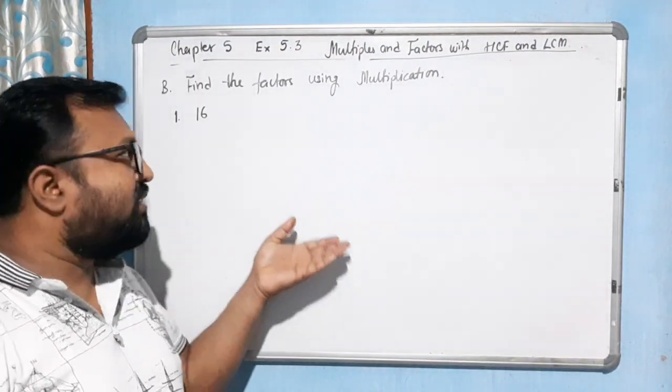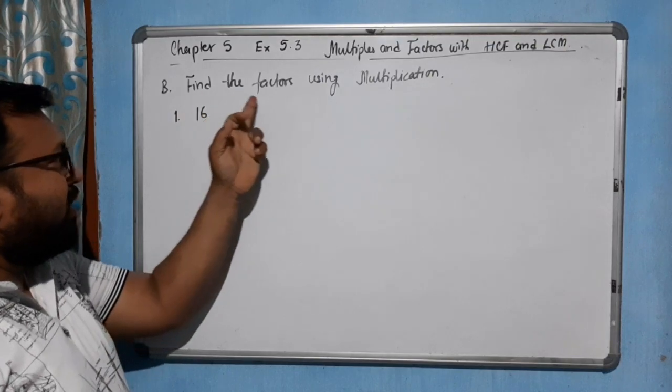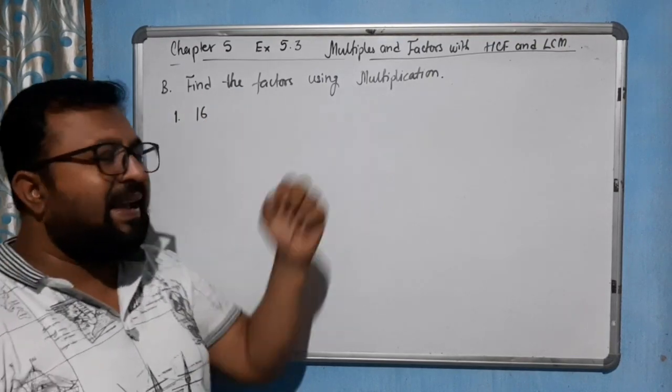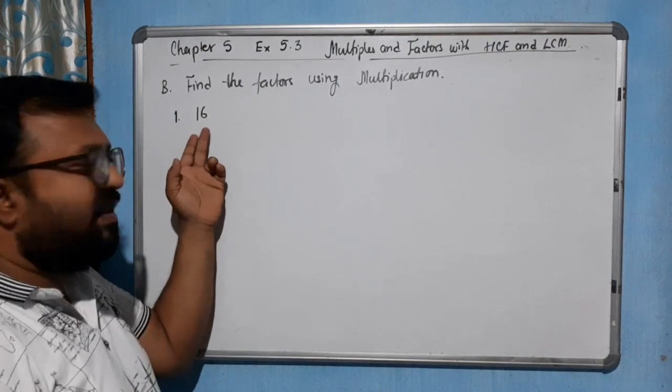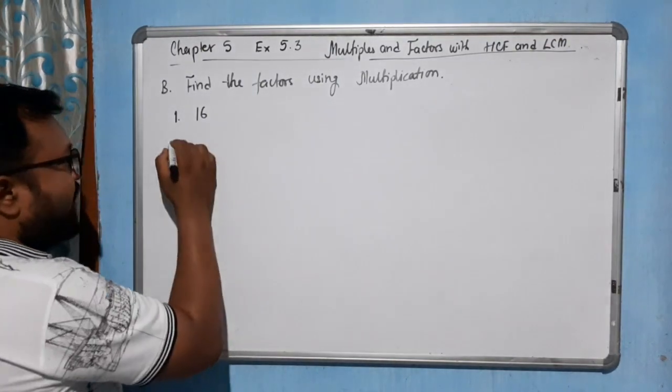Hello students, come to the next question of exercise 5.3, which is number B: find the factors using multiplication. We need to find the factors of the given number by using multiplication.